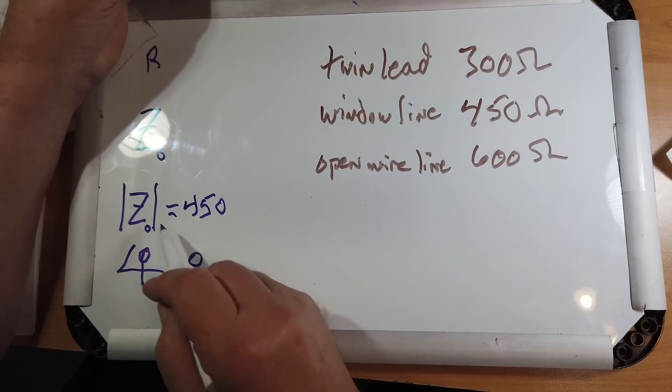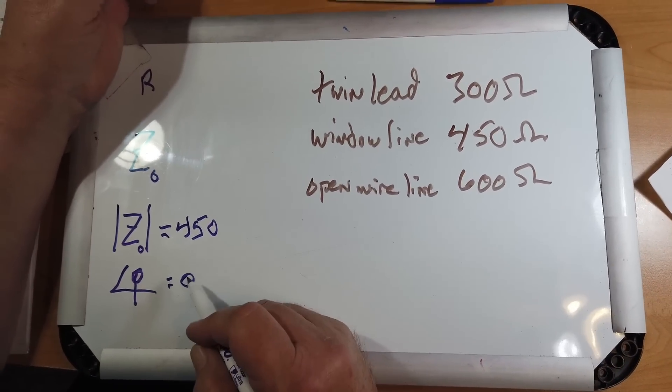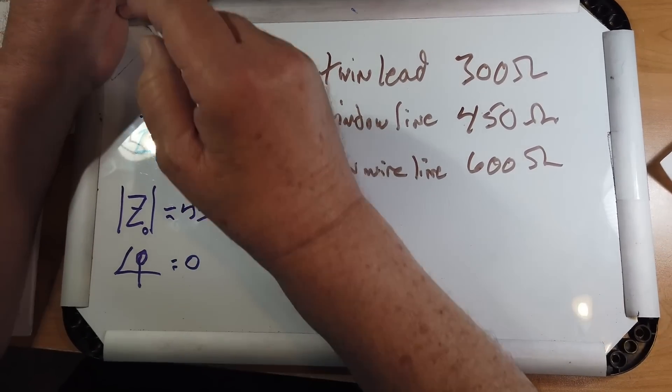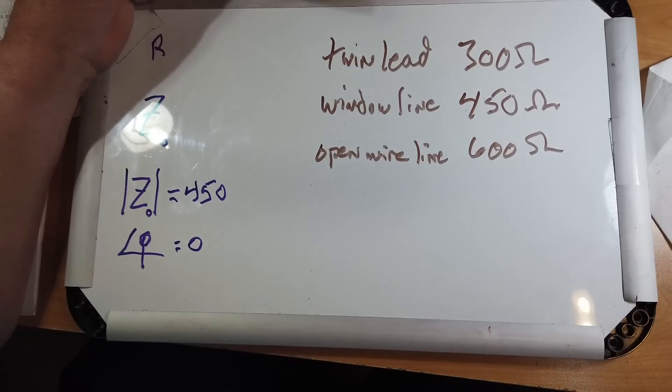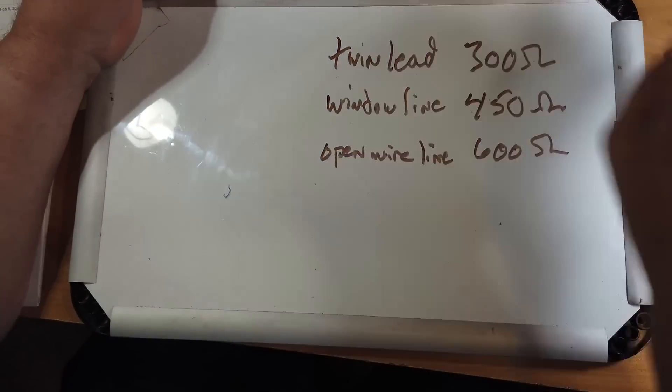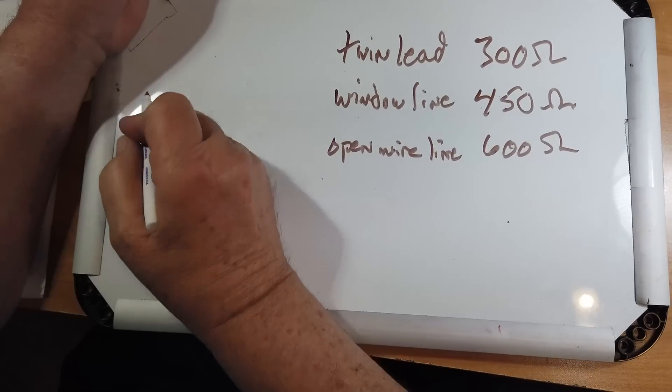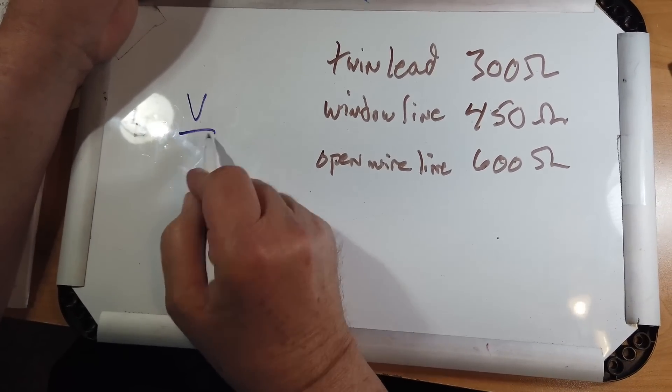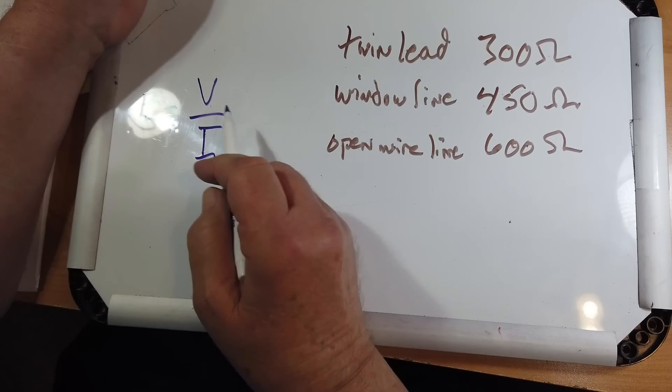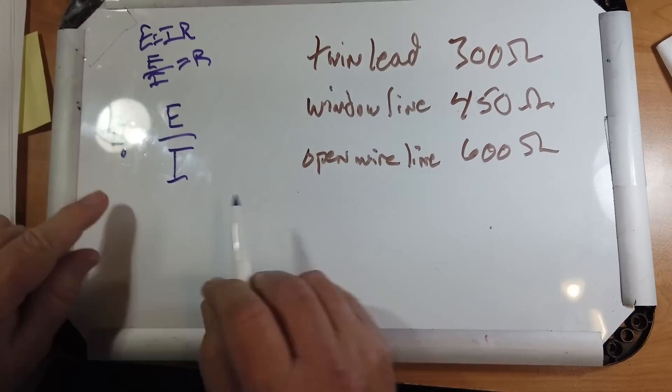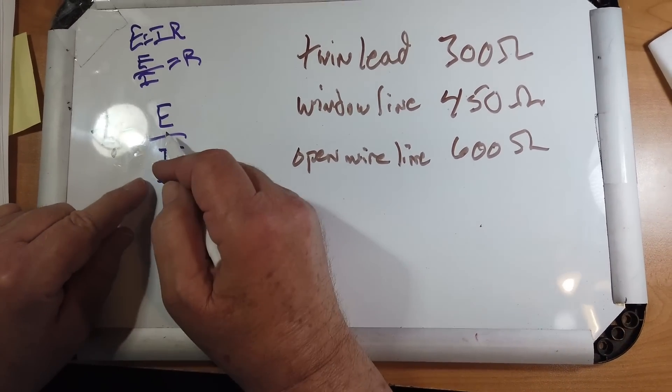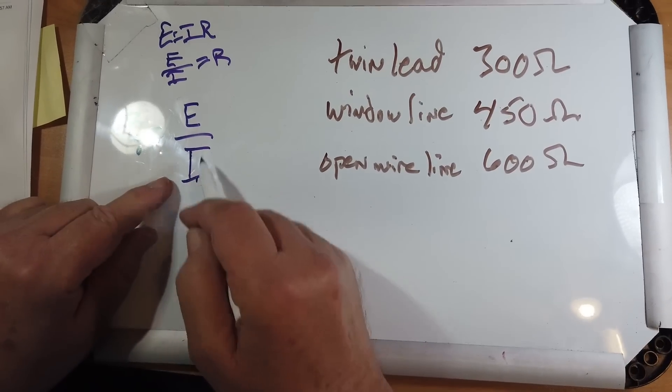But it can have a phase, which would like to be zero. But if you do not have a multiple of a half wavelength in line length, you will have a characteristic impedance that has a phase angle in it. The characteristic impedance Z equals, of course, the voltage over the current. We'll use V instead of E. Remember E equals IR, so E over I equals R.